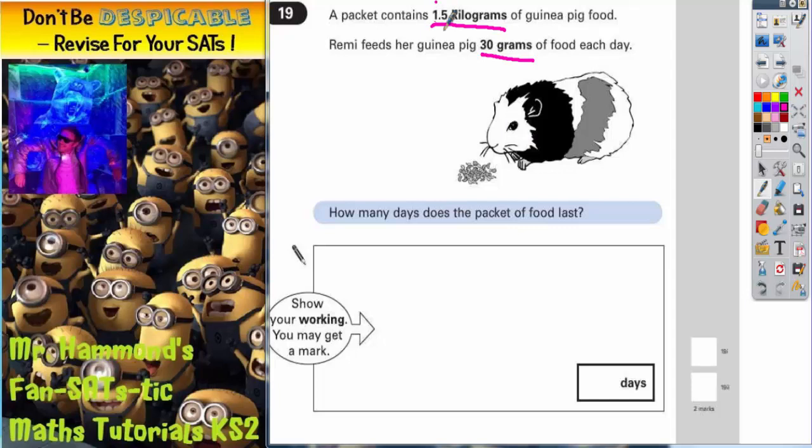So what we're going to do is take the kilograms and turn it into grams. You need to remember that one kilogram is the same as 1,000 grams. So 1.5 kilograms is the same as one and a half kilograms because 0.5 is the same as a half. One full kilogram would be 1,000 and a half a kilogram would be 500. So 1.5 kilograms is 1,500 grams.